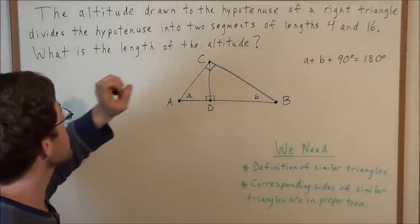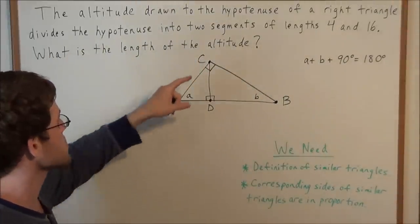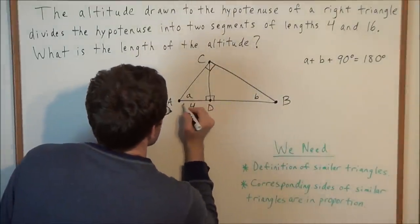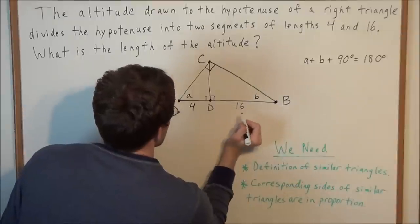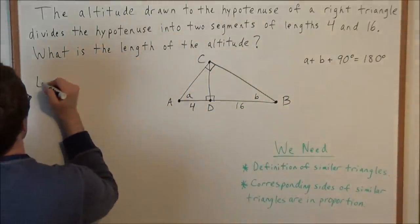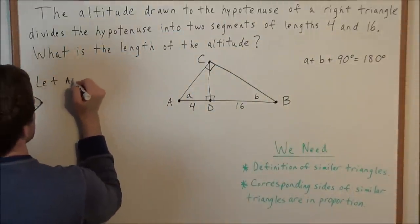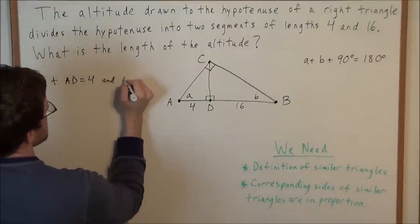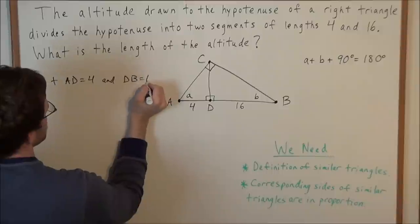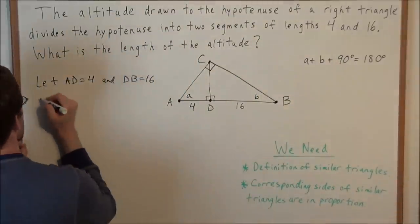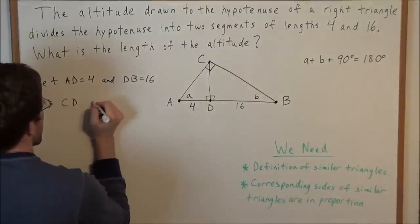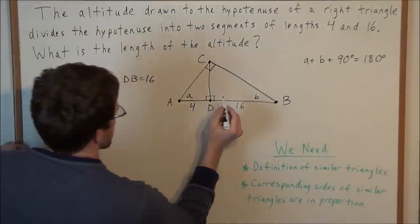So now the altitude divides the hypotenuse into two segments of lengths 4 and 16. So we'll let AD equal 4 and we'll let DB equal 16. And also we could say, let CD the altitude equal x, that's what we're trying to find.